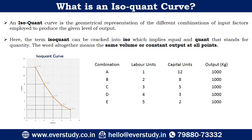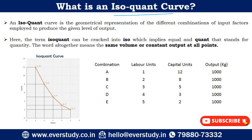So what is an isoquant curve? An isoquant curve is a geometrical representation of different combinations of input factors. On this curve, any combination of two inputs gives us the same level of output. A chart is given here which has five combinations, and the output from each combination is one thousand kgs.